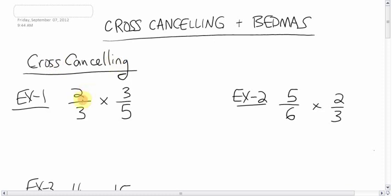Here's how it works. We have this multiplication question here with fractions. You could do this the old-fashioned way, which is 2 times 3, which is 6, and then the denominator, 3 times 5, which is 15, and you'd have an answer.